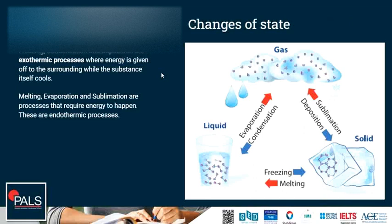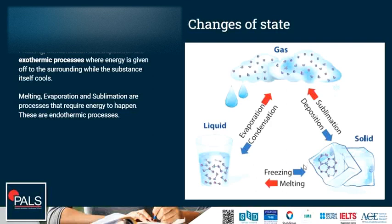Here is a summary of the changes of state. When a solid changes to a liquid, it is melting. When the liquid changes to a gas, it is evaporation. When a gas changes to a solid, we call this deposition. When a solid changes to a gas, it is sublimation. When the gas changes to liquid, it is condensation, and a liquid becoming a solid is freezing or solidification. Liquids can also boil at the boiling point to change into the gaseous state. There are differences between evaporation and boiling, but we will not cover those in this presentation.